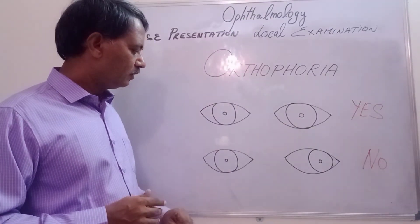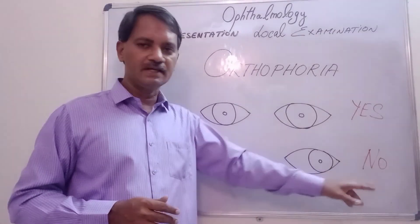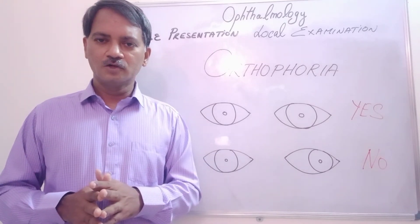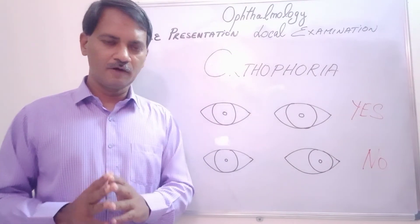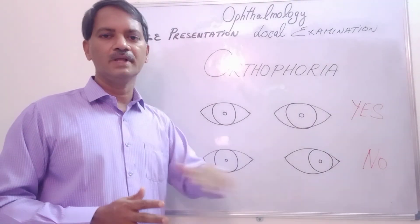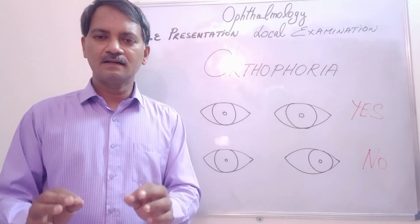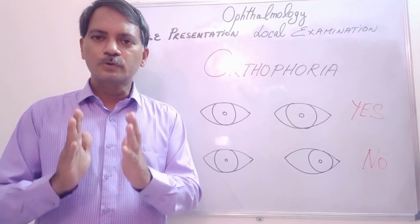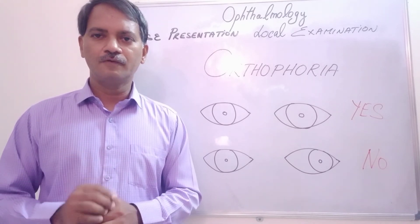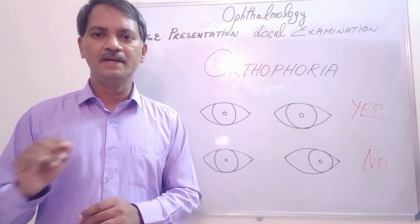In the second picture, the right eye has the cornea in the center, but the left eye has the cornea deviated outward. Both eyes are not parallel, so this is a classical example of eyes that are not orthophoric. This indicates there is some squint or strabismus in the patient, which we need to investigate further during diagnosis.